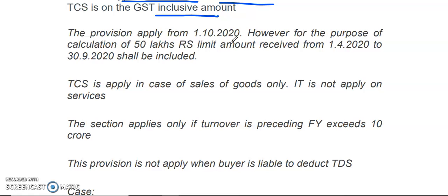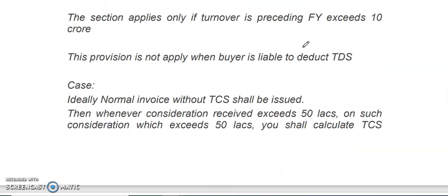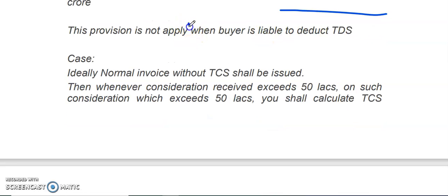The provision is applicable from 1st October 2020. However, for the purpose of calculating the limit of 50 lakhs, whatever amount is received from 1st April 2020 to 30th September 2020 will be included for calculating that limit. The TCS under this provision is applicable only on the sale of goods — it will not apply on the sale of services. It is applied only if the turnover in the preceding financial year exceeds 10 crore. This provision is not applied when the buyer is liable to deduct TDS under other provisions of the Income Tax Act 1961.